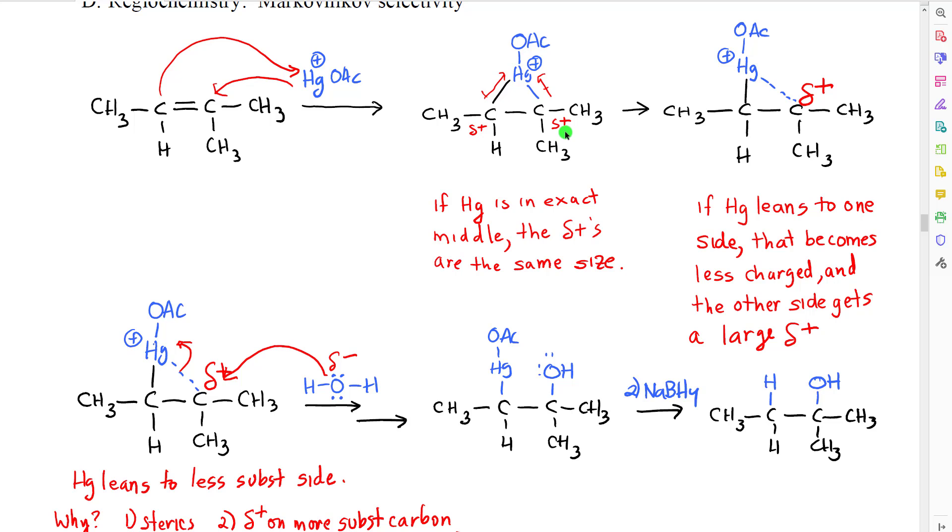However, it turns out that the mercury can sort of lean to one side, become closer to one of the carbons and farther away from the other carbon. In that case, then, the bond between the mercury and the carbon that is farther away becomes weaker. There's less electrons donating to the carbon, and the partial positive on that side would become larger. If this were to happen, we would expect the mercury to lean toward the less substituted carbon, so that the positive charge is on the more substituted carbon, remembering that the more substituted a carbocation is, the more stable. So by analogy, the more substituted a molecule or an atom with a partial positive is, the more stable it is, the lower the potential energy.